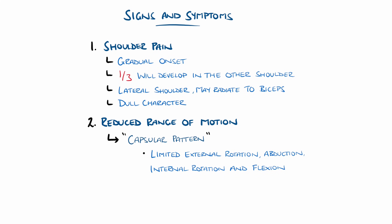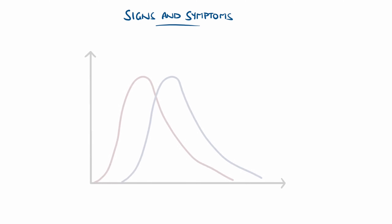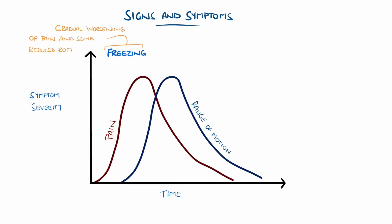Classically, adhesive capsulitis was described in three stages. Stage 1, or freezing, features a gradual onset and progression of pain, usually in the lateral shoulder, which can be troublesome at night. Initially there may not be much limitation in range of motion, but this does also worsen. Freezing will typically last two to nine months.